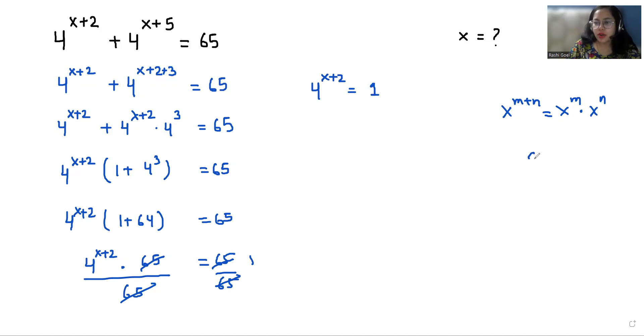Now according to exponent rule, a power 0 is always equals to 1. Whatever the value of a is. So 2 power 0 is 1, 3 power 0 is also 1.